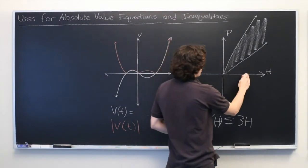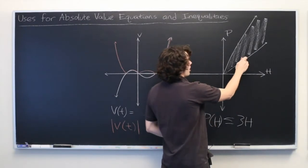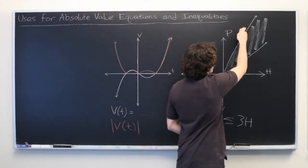So for any given number of humans, h, we want to order between this value and this value number of slices of pizza.